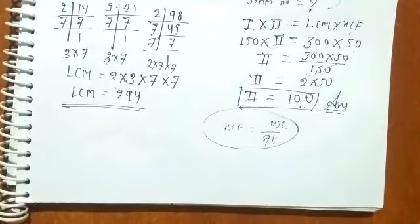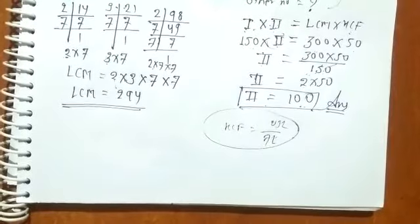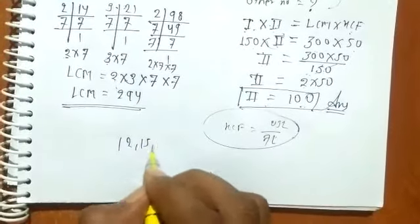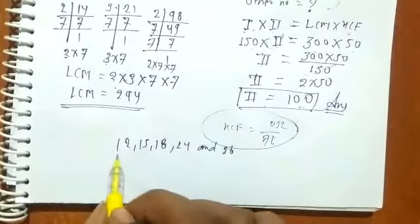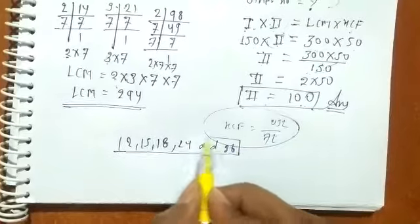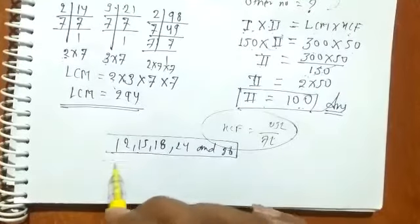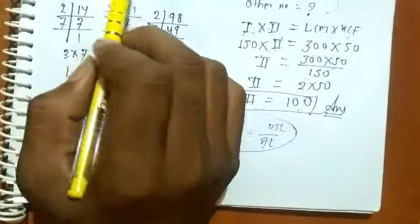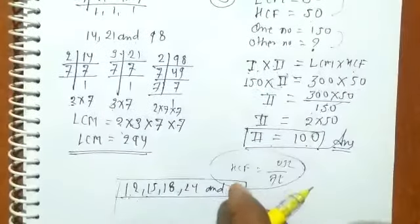Question number six: find the smallest number which, when divided by 12, 15, 18, 24, and 36, leaves no remainder. This means we need to find the LCM of 12, 15, 18, 24, and 36, because any number exactly divisible by all of them must be a common multiple. You can use the common division method to find the LCM easily.